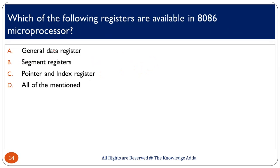Which registers are available in the 8086 microprocessor? In the 8086 we have four general data registers: AX, BX, CX, and DX. We also have segment registers such as CS, ES, and DS, and we also have pointer and index registers. So in this case, all of the above is the correct option.